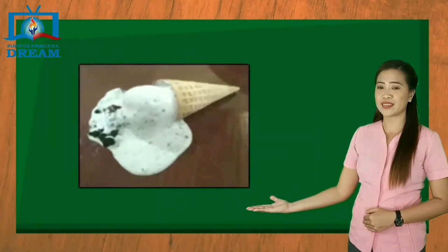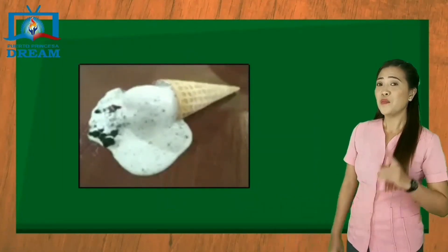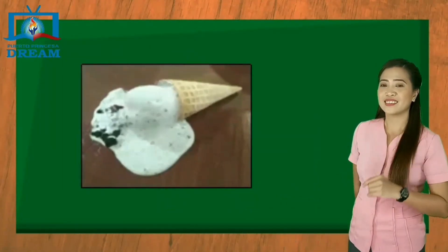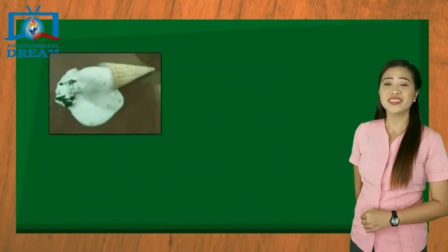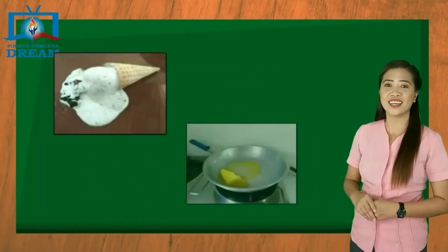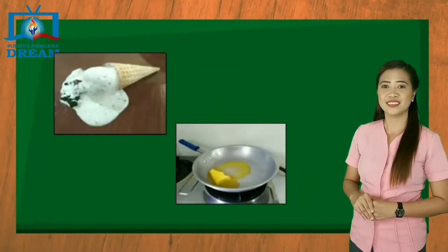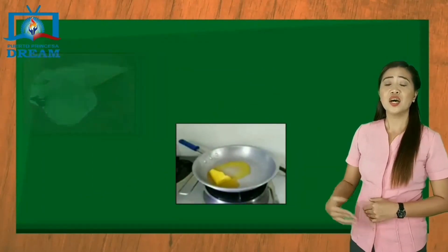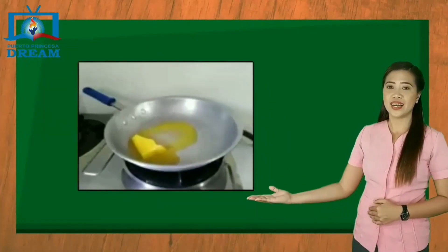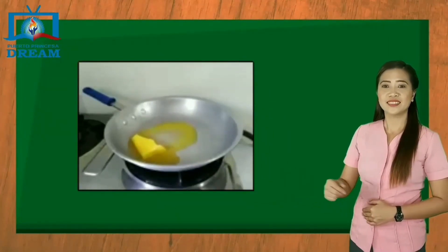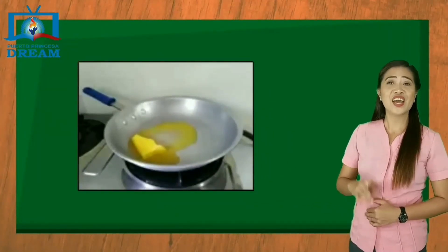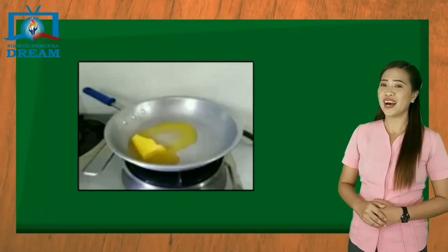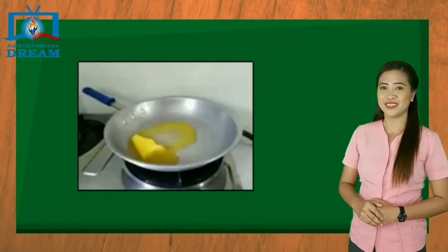Surbetes — magaling, ito ay matutunaw dahil sa hangin. Mantikilya — mahusay, ito ay matutunaw dahil sa init ng apoy.